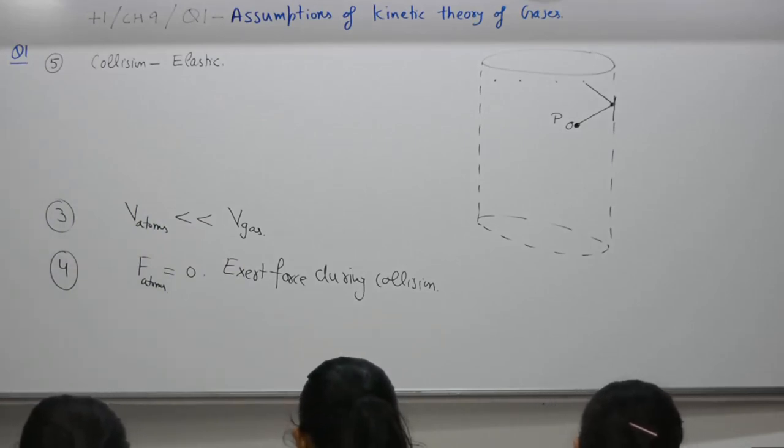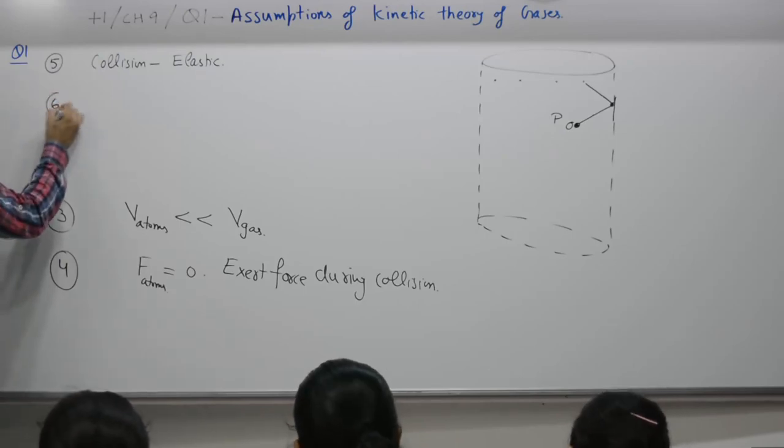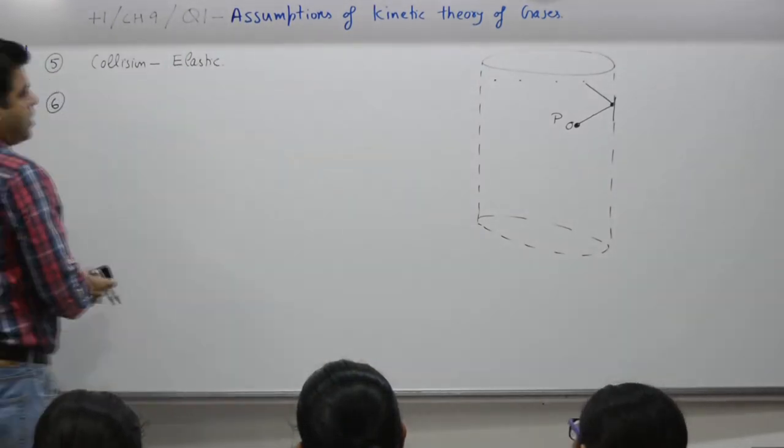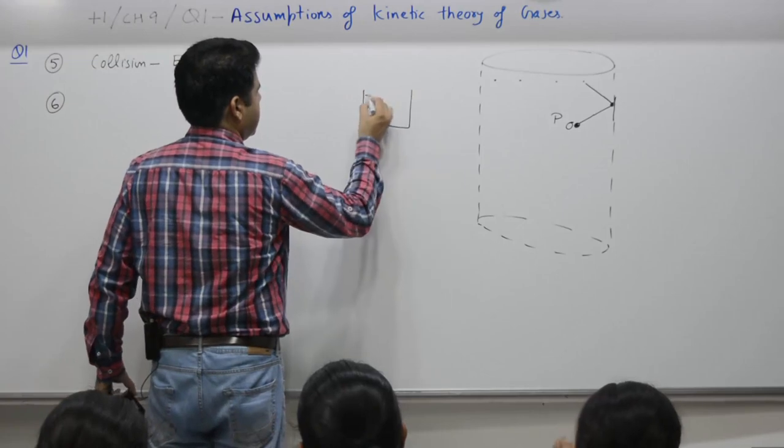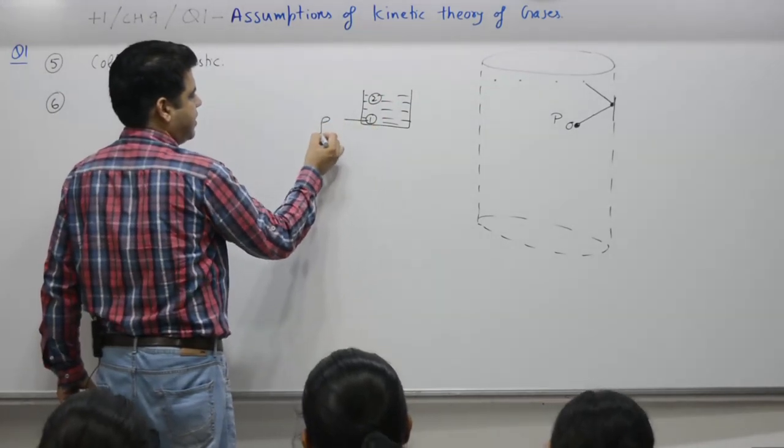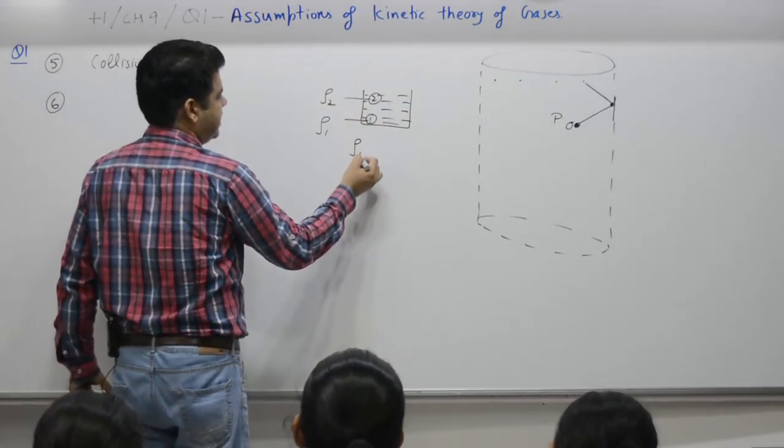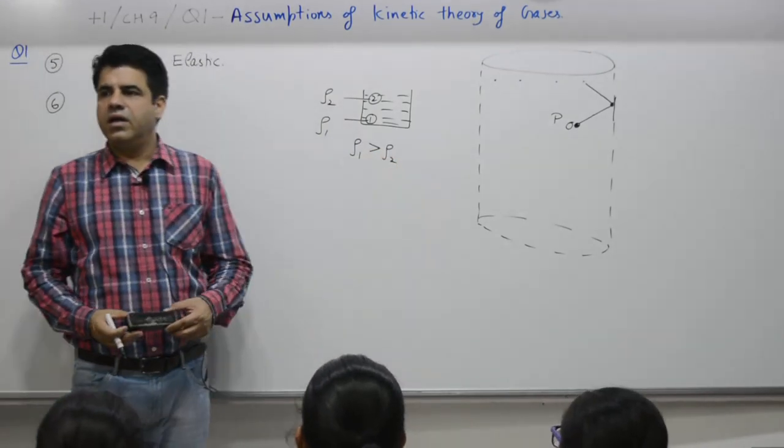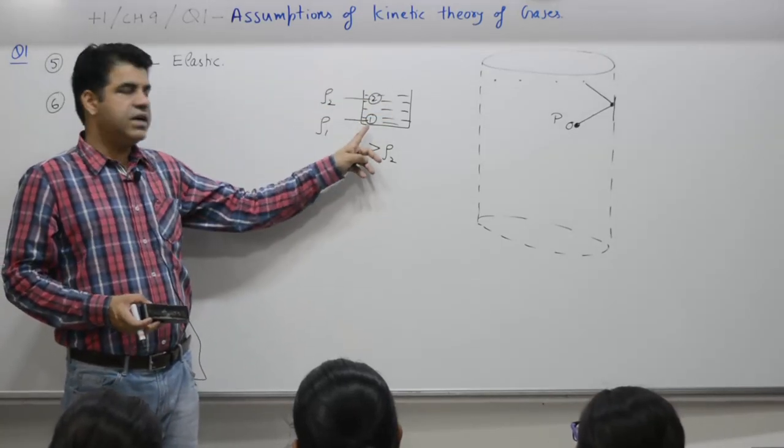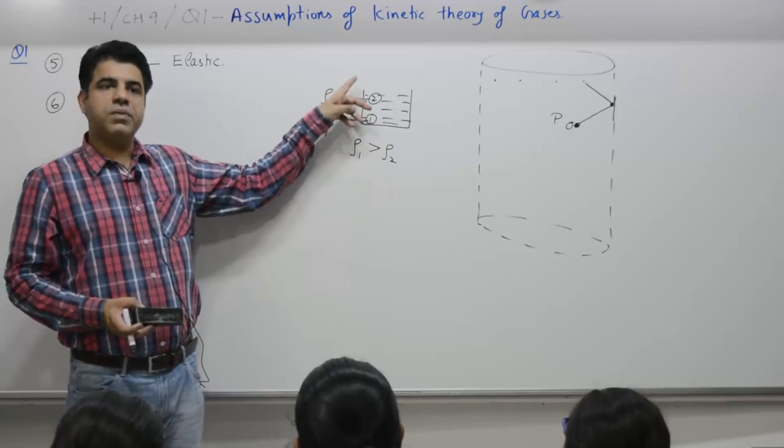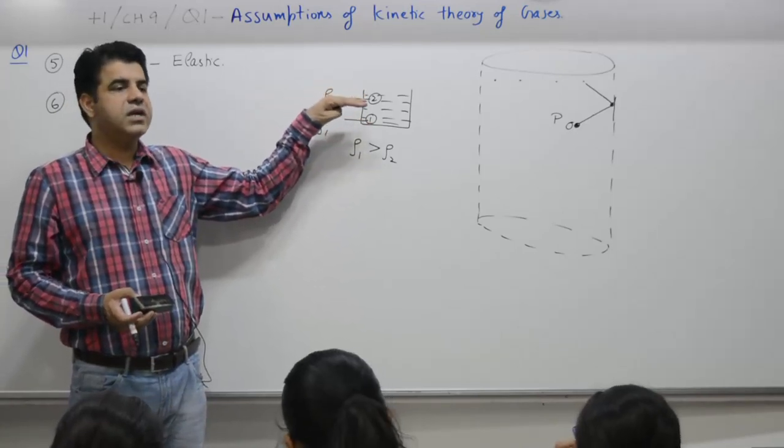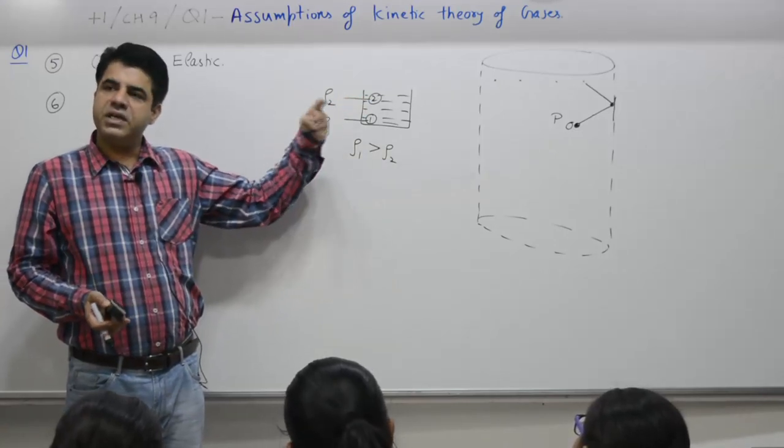Point number 6, molecular density is uniform throughout the gas. In a lake, two points, point number 1 and point number 2. Density at 1 and density at 2. Density at 1 is more than density at 2. Why? Because of pressure, because of compression, density at 1 is more in comparison to density on the top layer. So we say there is a density gradient in the lake. Density is different at different points. But we assume the density to be same.